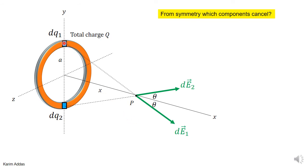Take an element of charge dq1 on the top of the ring along the y-axis, and another element of charge dq2 opposite to it on the other side. The electric field due to dq1 points radially outward at point p, and the electric field due to dq2 also points radially outward. Their magnitudes dE1 and dE2 are exactly the same, because the distance is the same, and assuming the charge is uniformly distributed, the charge itself is the same.